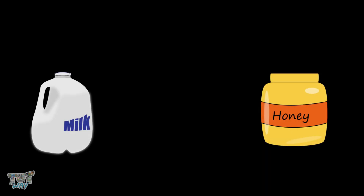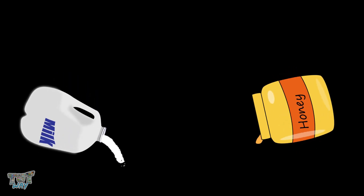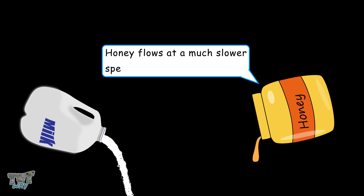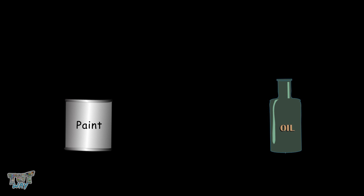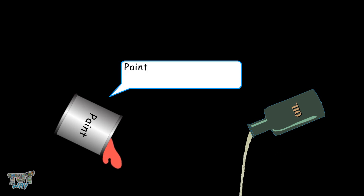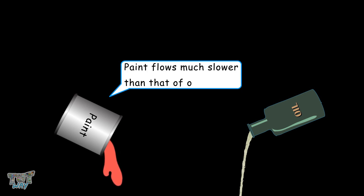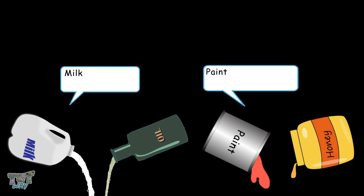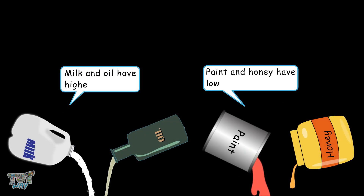Here we have two liquids: honey and milk. Now let's study how they flow. You can easily see that the honey flows at a much slower speed than milk. Now here we have two more liquids, paint and oil. Compare how they flow when we pour them. Paint is flowing much slower than oil. So we can say that milk and oil have a higher flow rate than that of honey and paint.